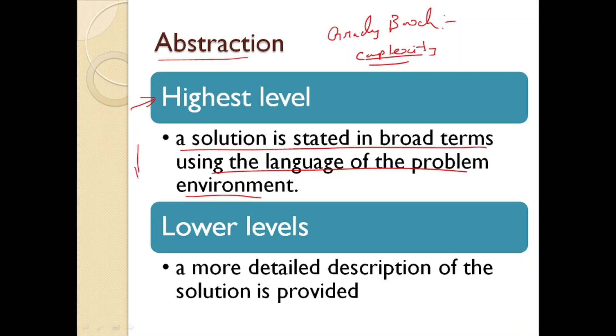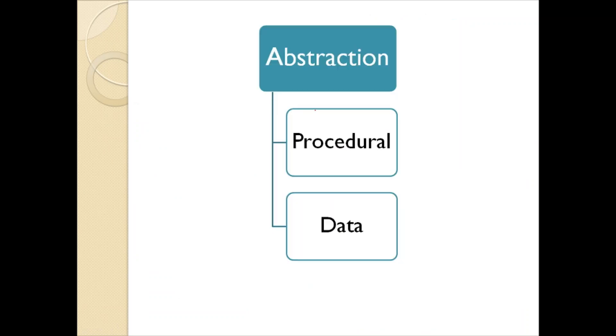As we move towards the lower level, a more detailed description of the solution is provided. If we think of abstraction, it has two aspects: one is procedural and another one is data abstraction. As we move through different levels of abstraction, we work to create these types of abstraction.